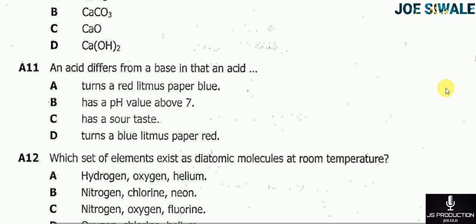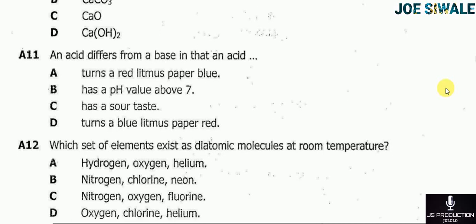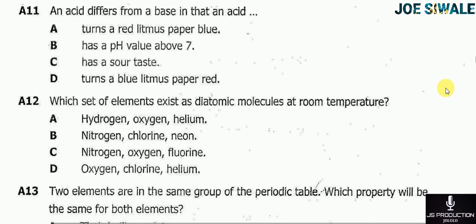Question 11 reads: an acid differs from a base in that an acid — A turns a red litmus paper blue; B has a pH value above 7; C has a sour taste; D turns a blue litmus paper red. The answer is D, turns a blue litmus paper red.